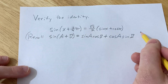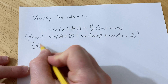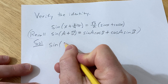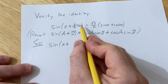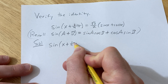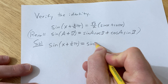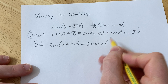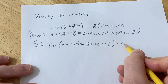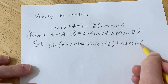So we're going to use this to verify this trig identity. We'll start with the left-hand side: sine of x plus pi over 4. This is equal to sine x cosine pi over 4, plus cosine x sine of pi over 4.